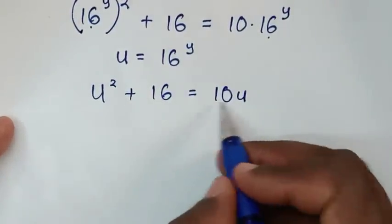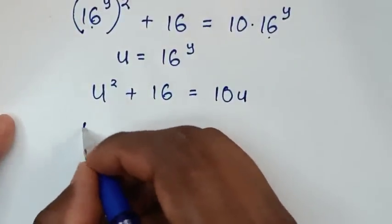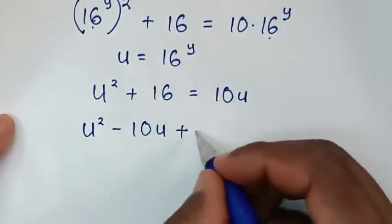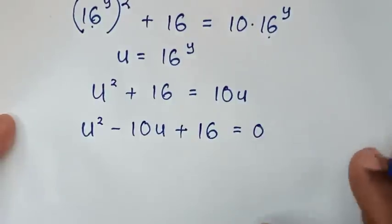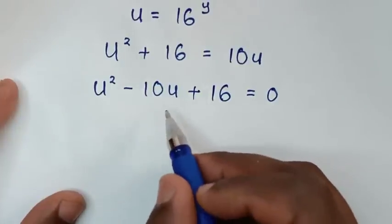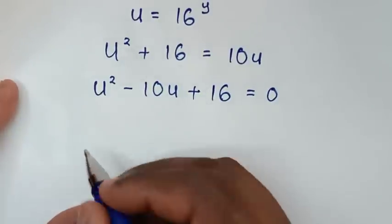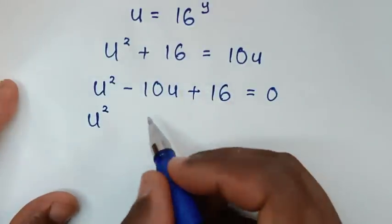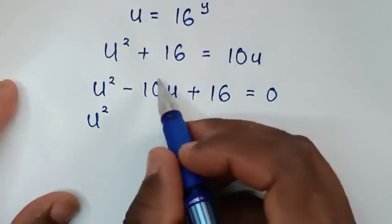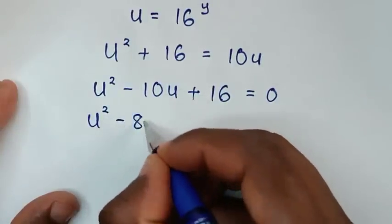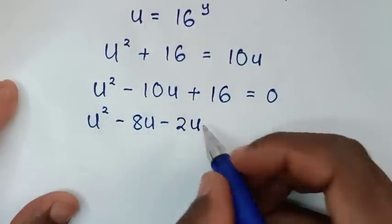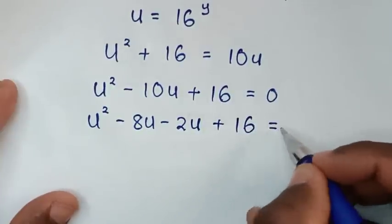Then we take 10u to the other side, so it will be u squared minus 10u plus 16 equals 0. This quadratic equation can be solved by grouping and factorization. Since 16 is the same as 8 times 2, the minus 10u can be split into minus 8u minus 2u, giving u squared minus 8u minus 2u plus 16 equals 0.